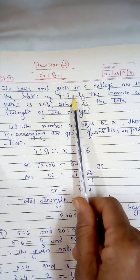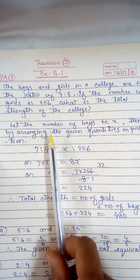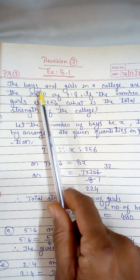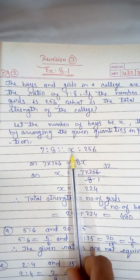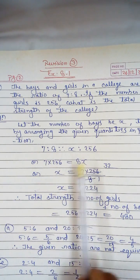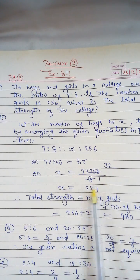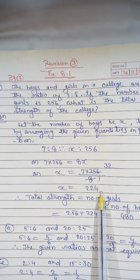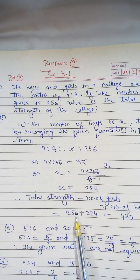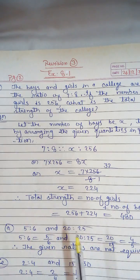The next question: the boys and girls in the college are in the ratio 7 to 8. If the number of girls is 256, what is the total strength of the college? Let the number of boys be x. Arranging in proportion: 7 is to 8 as x is to 256. So 7 into 256 equals 8 into x, giving x equals 7 into 256 upon 8, which equals 224 boys. Total strength equals 256 girls plus 224 boys equals 480.